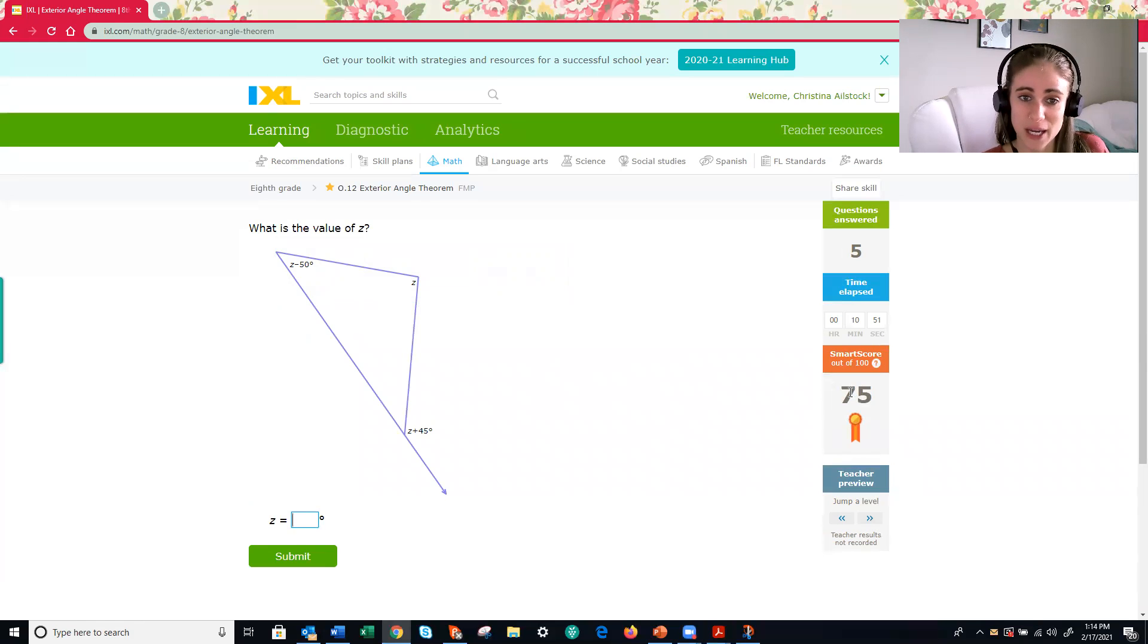This time, instead of knowing my angle measurements, all of my angle measurements are an expression, but the rule still applies. That theorem, the exterior angle theorem still applies. And that exterior angle theorem tells us that our exterior angle, so our exterior angle is z plus 45, is equal to the sum of my two interior angles. So z and then z minus 50.